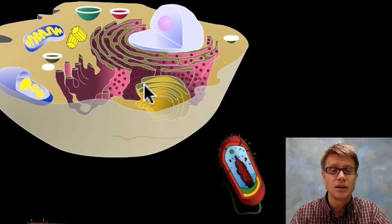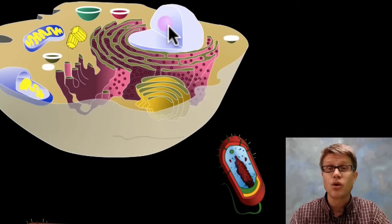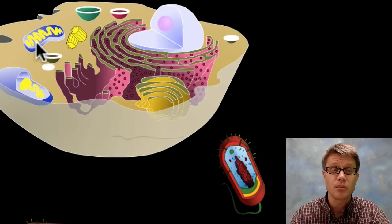In a eukaryotic cell we're going to have a nucleus, we're going to have organelles like endoplasmic reticulum, Golgi apparatus, mitochondria.